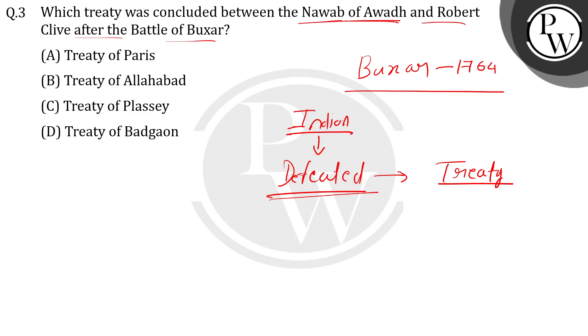The treaty that was made was with the Nawab of Awadh, whose name was Shuja-ud-Daula. The treaty concluded between the Nawab of Awadh and Robert Clive is known as the Treaty of Allahabad.